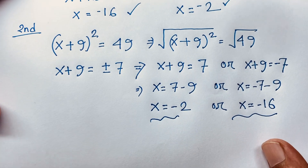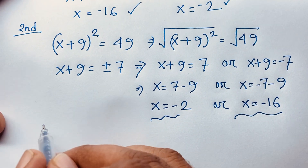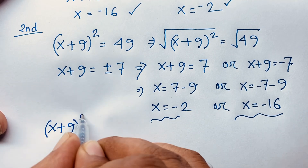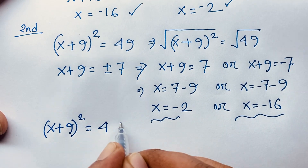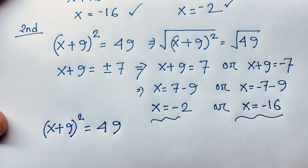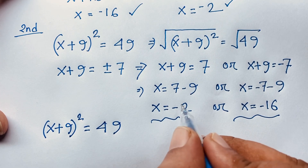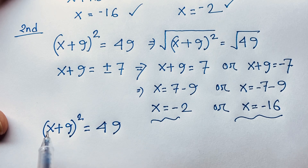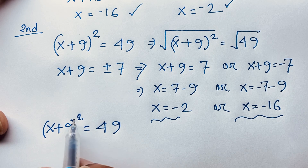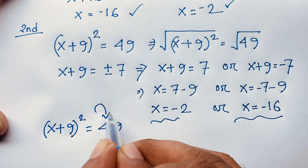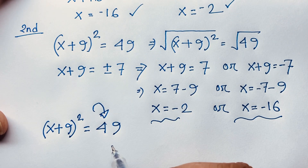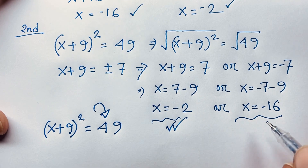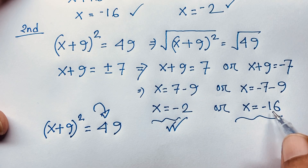Let's verify. Our question is x plus 9, whole to the power 2, is equal to 49. If x equals negative 2: negative 2 plus 9 is 7, and 7 to the power 2 is 49. Yes — left hand side equals right hand side, so this is a correct answer.